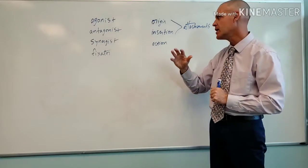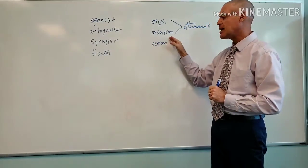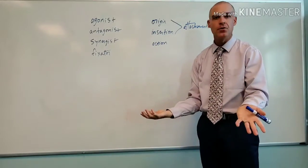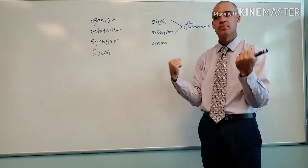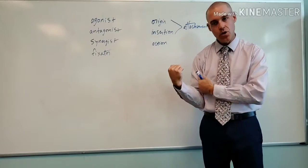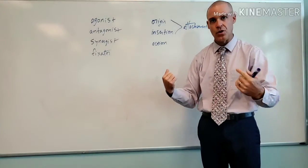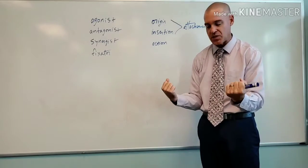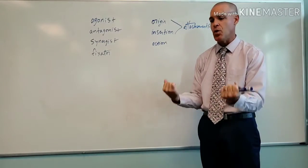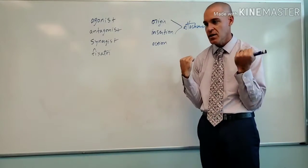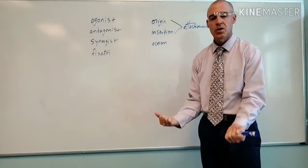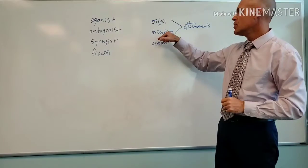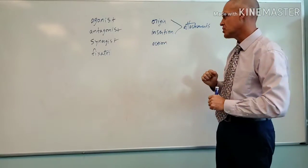Students have a lot of trouble with that. If you figure out the action — which is generally very easy — you can work it out. If the muscle flexes the elbow, think about doing curls in the gym. When doing curls, your humerus doesn't move — you're moving the radius and ulna. So the ulna is going to be the insertion.